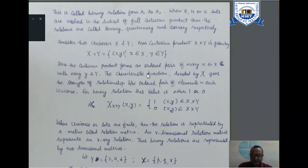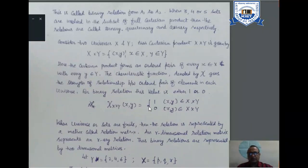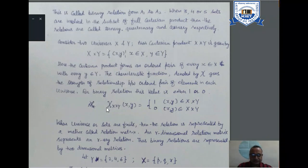This characteristic function, represented by lambda, works on X cross Y. Its value will be either 1 or 0. Some elements from the first domain are connected with some elements of the other universe — those who are connected have a characteristic value of 1, and those who are not connected have a characteristic value of 0. This characteristic function makes the relationship from the first universe of discourse to the second universe of discourse.